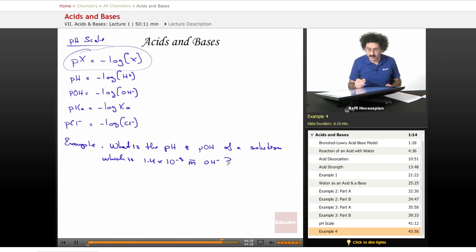Okay, well, they want the pH and they want the pOH. I know the pH is the negative log of the hydrogen ion concentration, pOH is the negative log of the hydroxide ion concentration. Well, they give me the hydroxide ion concentration, so why don't I just deal with that one first?